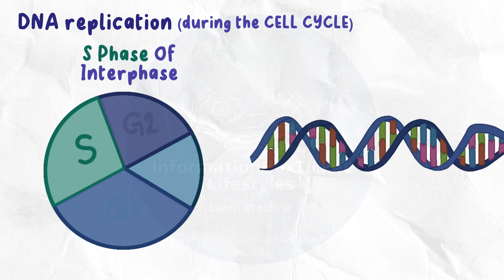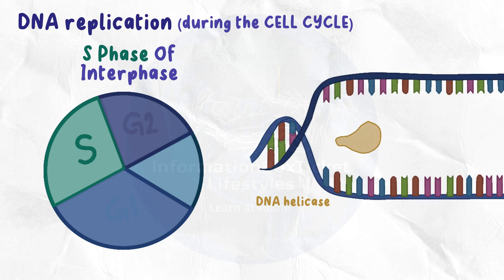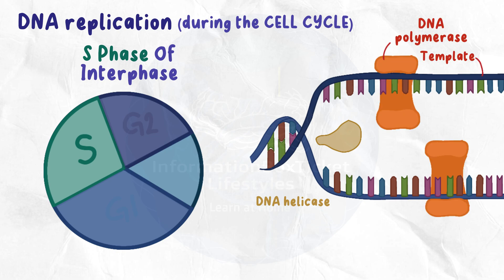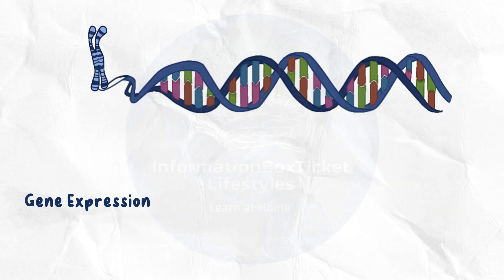If we zoom in on double-stranded DNA, we can see that an enzyme known as DNA helicase separates the two DNA strands during replication. The single strands are then used as templates by another enzyme, DNA polymerase, which adds complementary nucleotides to them.